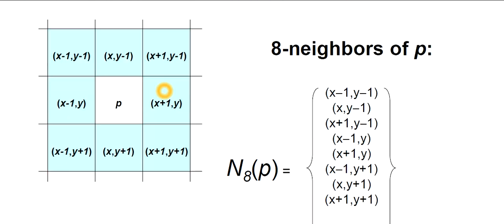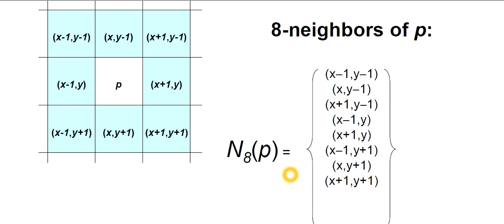We also have the eight neighbors of P. Previously we considered only horizontal and vertical neighbors; now we also include the diagonal corner pixels. The eight neighbors are: x-1, y-1; x, y-1; x+1, y-1; x-1, y; x+1, y; x-1, y+1; x, y+1; and x+1, y+1. All of these constitute the eight neighbors of P. Take a screenshot.